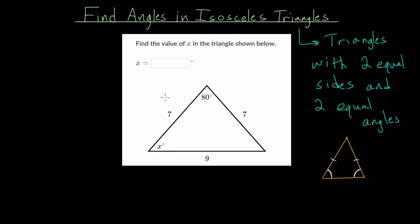we are trying to find this missing angle X, and notice that this triangle has two equal sides. So that tells us this is an isosceles triangle.